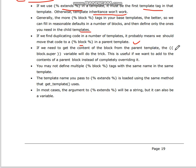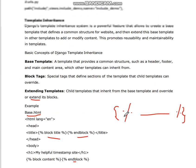If we need to get the content of a block from the parent template, we should use the block.super variable. This is useful when you want to add to the contents of a parent block instead of completely overriding it. We should not define multiple block tags with the same name in the same template — each block must have a different name. The template name passed to extends is loaded using the same method that get_template uses, and in most cases the argument to extends will be a string, but it can also be a variable.